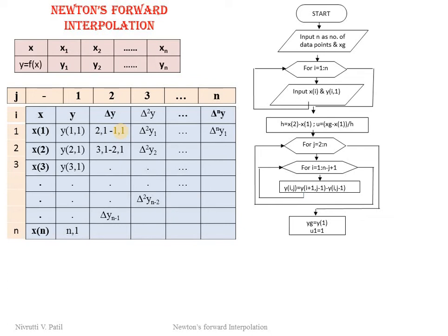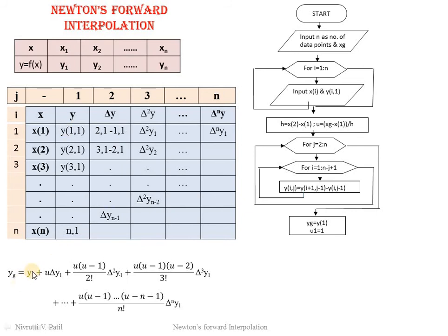Next we initialize yg equal to y(1) and u1 equal to 1. In the Newton's forward interpolation formula, yg starts with the initial value of y, which is y(1). The variable u1 is separate from u and is used for calculating the factorial terms — specifically the consecutive multiplications u times (u minus 1), u times (u minus 2), and so on — so it is initialized to 1.